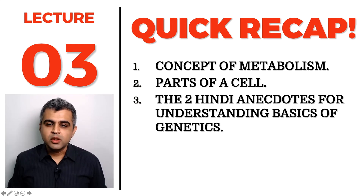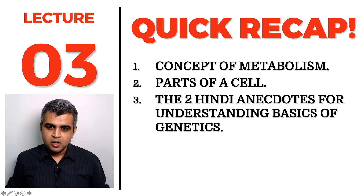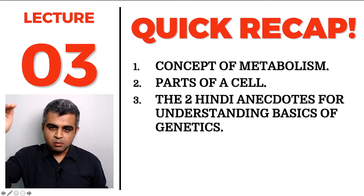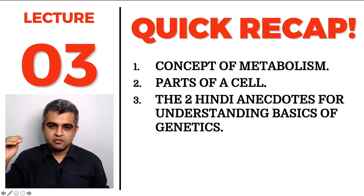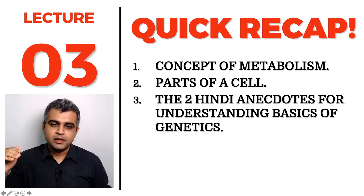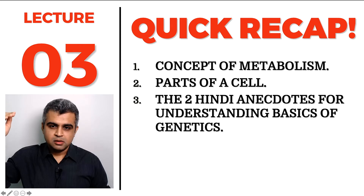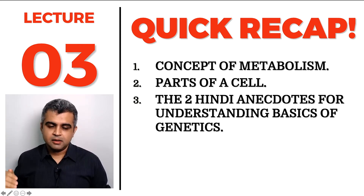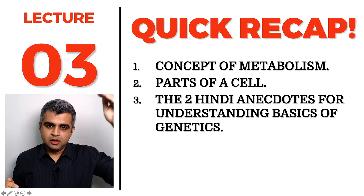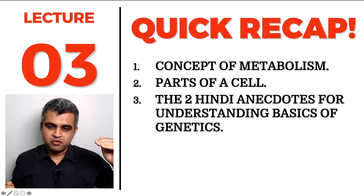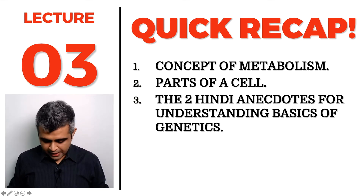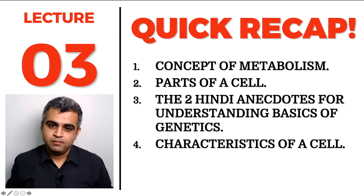We also explained the basics of genetics using an analogy: just as a cupboard contains books containing pages with things written on them, the nucleus contains chromosomes, which are made up of DNA and RNA, which carry genes, which have various different types of alleles.